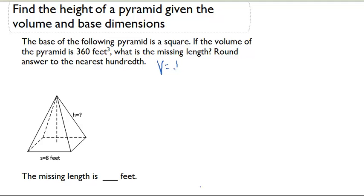We know the volume of a pyramid is one-third times capital B times H, where the big B stands for the base area.